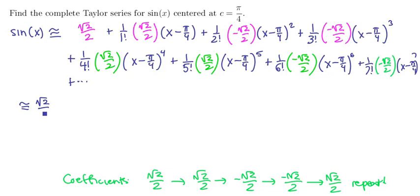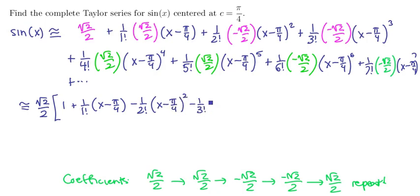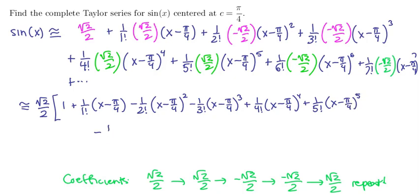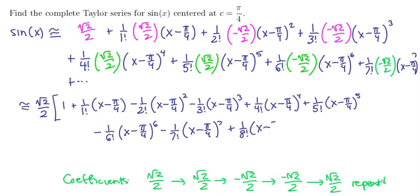If I pull out a √2 over 2 from all of the pieces, we're going to have 1, plus 1 over 1 factorial times x minus π/4, minus 1 over 2 factorial times x minus π/4 squared, minus 1 over 3 factorial times x minus π/4 cubed, plus 1 over 5 factorial times x minus π/4 to the fifth, minus 1 over 6 factorial times x minus π/4 to the sixth, minus 1 over 7 factorial times x minus π/4 to the seventh. The next would be positive 1 over 8 factorial times x minus π/4 to the eighth.